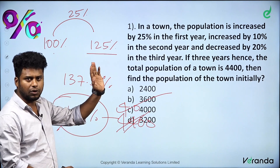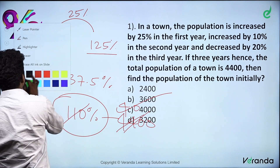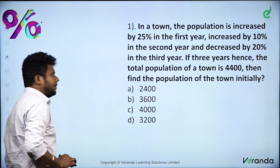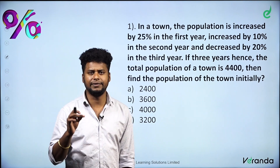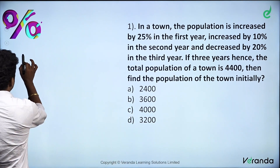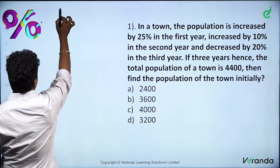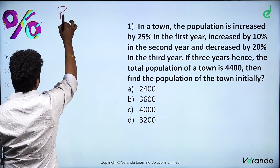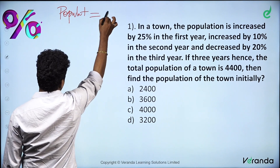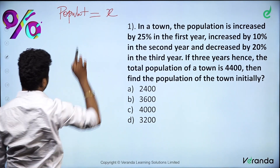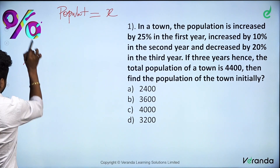So let's know the conventional method. Round-off values are a problem with the logical method. But if we set up equations, we can solve the problem properly. Now, in this town, we don't know what the population is. So let the total initial population be x.